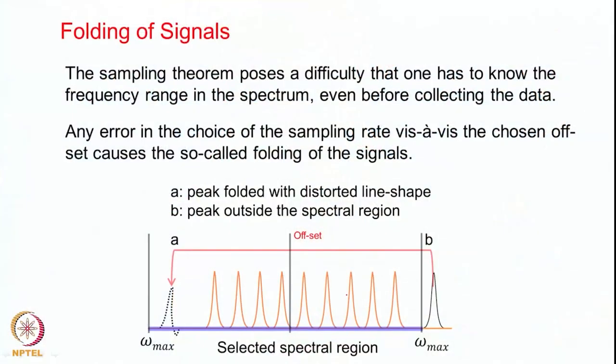The sampling theorem therefore poses a difficulty: one has to know the frequency range in the spectrum even before collecting the data — where to place the offset, what is the spectral range, and what is the maximum frequency with respect to the offset. This is not easy to know. What happens as a consequence is that some artifacts appear in your spectrum, and this is shown in this particular slide in a pictured way.